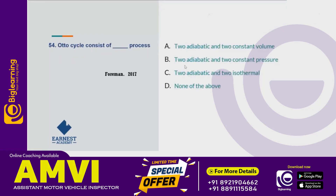Next question: the Otto cycle consists of how many processes? The answer is option A — 2 adiabatic and 2 constant volume processes. The Otto cycle has two adiabatic processes and two constant volume processes.